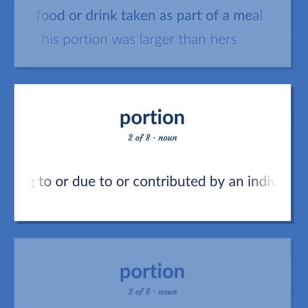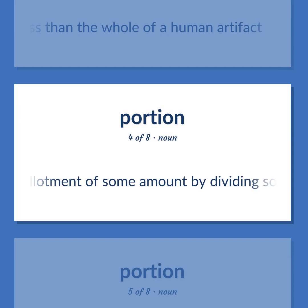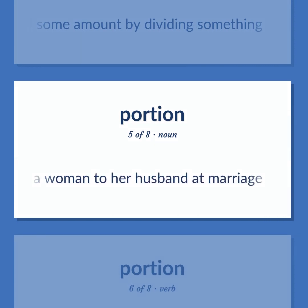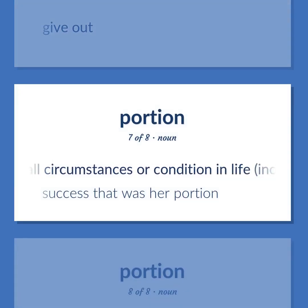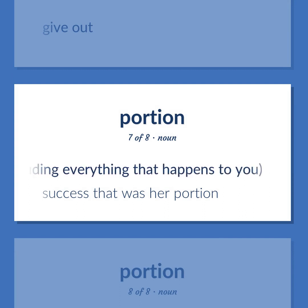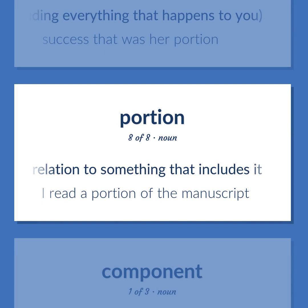Assets belonging to or due to or contributed by an individual person or group. Something less than the whole of a human artifact. The allotment of some amount by dividing something. Money or property brought by a woman to her husband at marriage. Give out. Your overall circumstances or condition in life, including everything that happens to you — success: that was her portion. Something determined in relation to something that includes it — I read a portion of the manuscript.